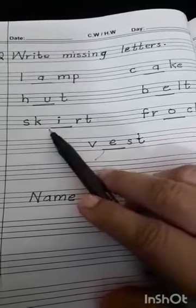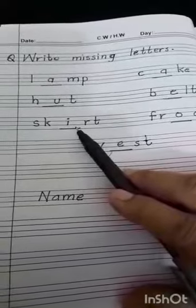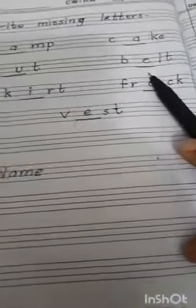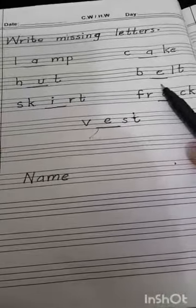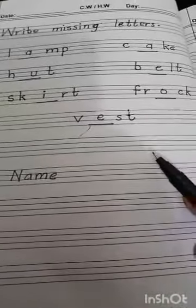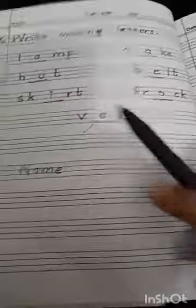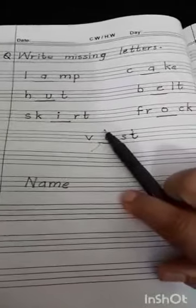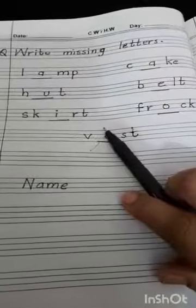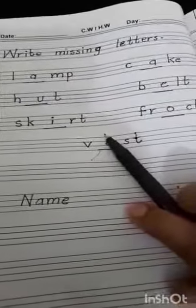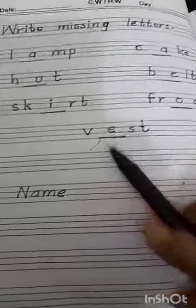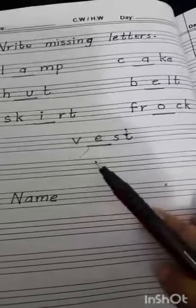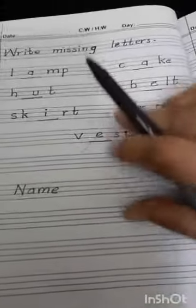Then B-E-L-T — BELT. Next, S-K-blank-R-T — which letter is missing? I — so the word is SKIRT. Then F-R-blank-C-K — the missing letter is O — so the word is FROCK. Then V-blank-S-T — the missing letter is E — so the word is VEST.